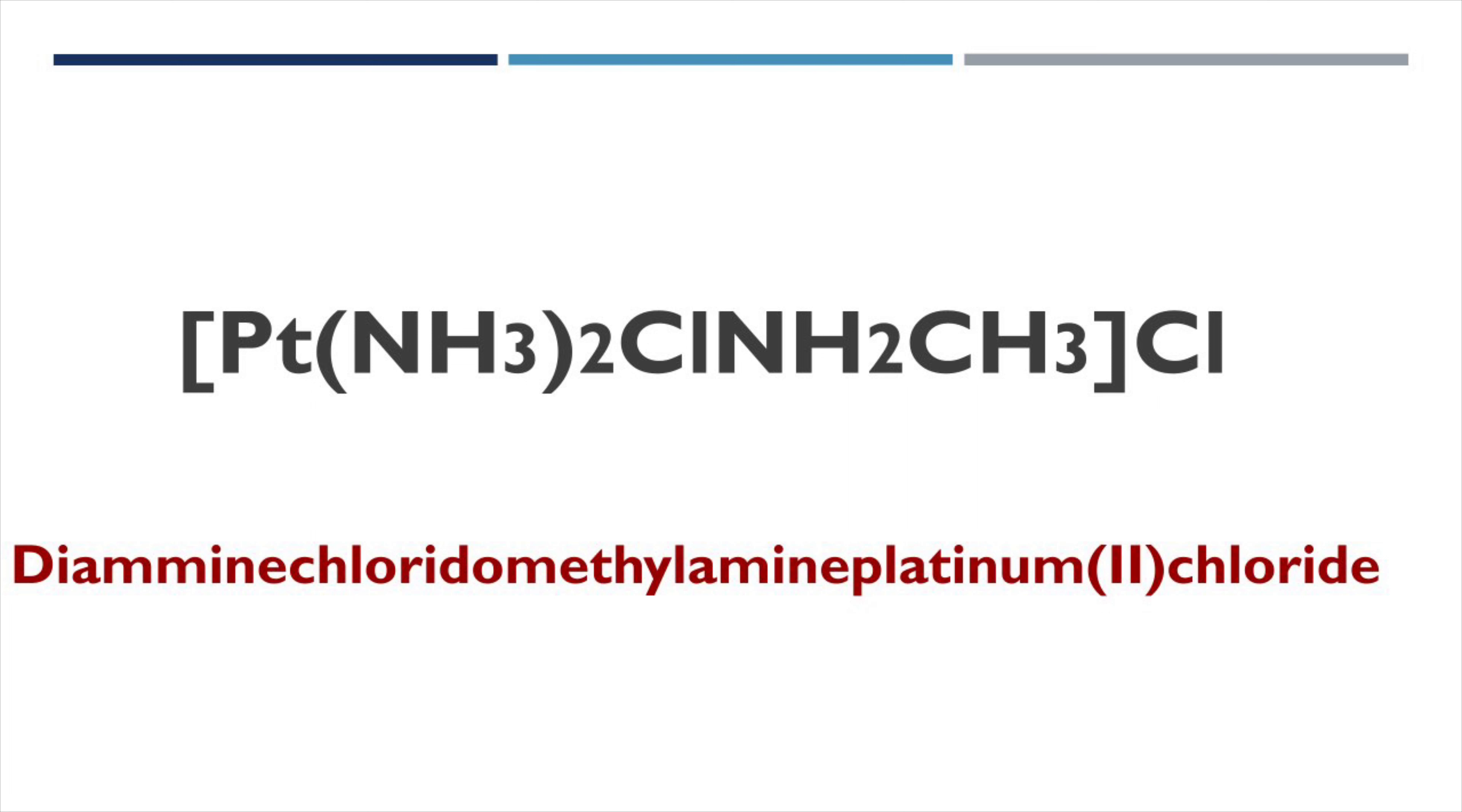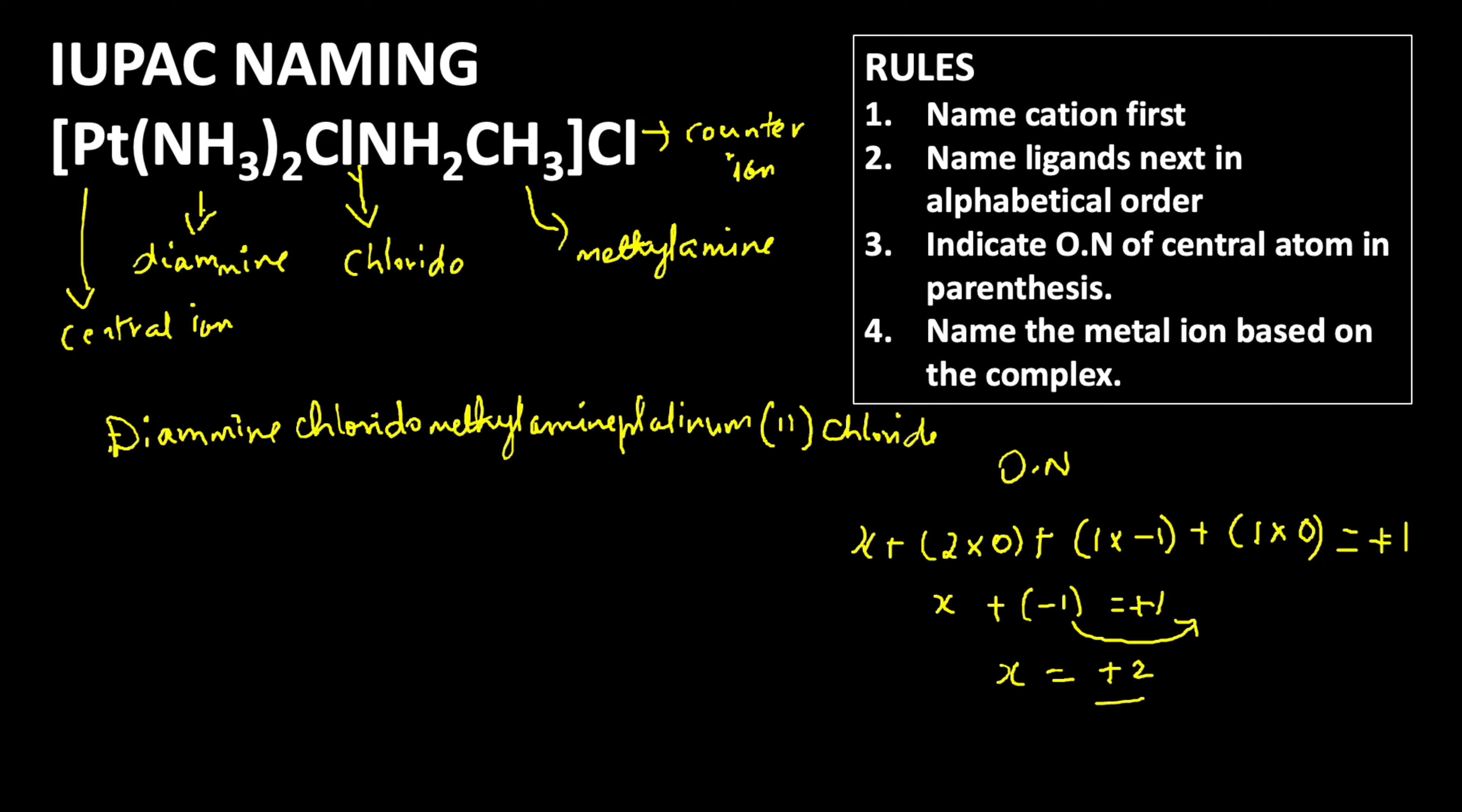So in Roman numeral inside the parenthesis we are writing chloride. Diamine chlorido methylamine platinum(II) chloride is the IUPAC name.